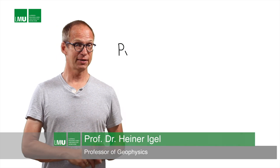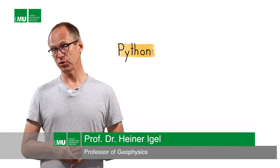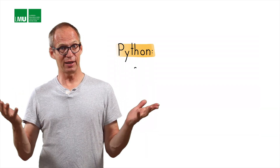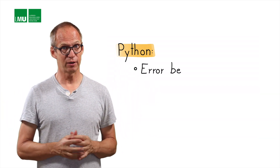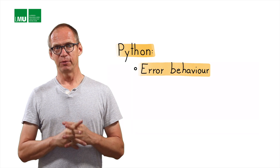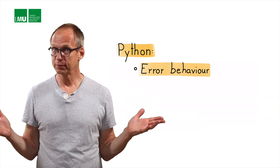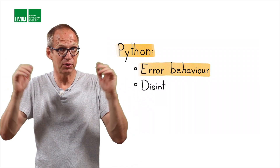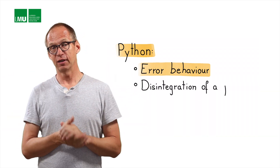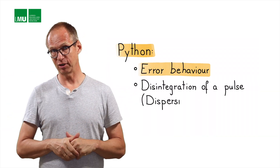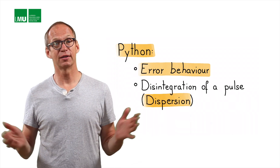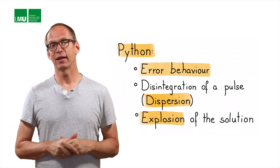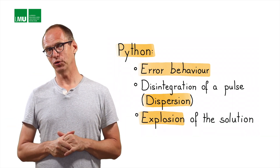With our Python implementation and analytical solutions, we've seen how the error behaves for our finite difference calculations. We've seen weird phenomena like a Gaussian pulse disintegrating into a longer waveform — what we called dispersion — and we also saw the solution exploding. Now, how can we explain that from a mathematical point of view?